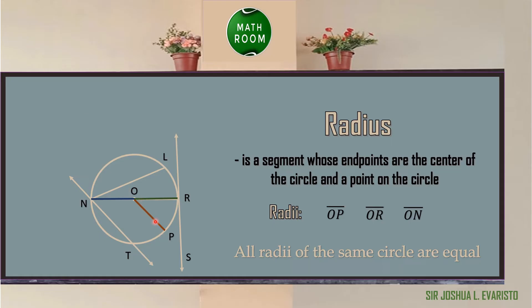and segment ON. We must remember that all radii of the same circle are equal. If the measurement of segment OP is 5 cm, therefore the measurements of segments OR and ON are also 5 cm.